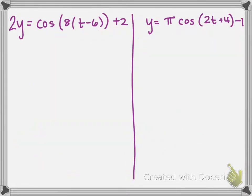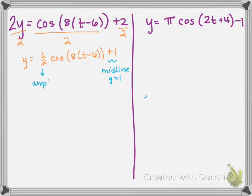For this next example, there's a 2 on the y, so we have to address that first and divide the whole function by it. That cleans up to y equals 1 half cosine of 8 times t minus 6 plus 1. From that, we can pull that our midline is at y equals 1, so it's been vertically shifted up one unit. We can also pull that our amplitude is 1 half, so this one has a vertical compression.